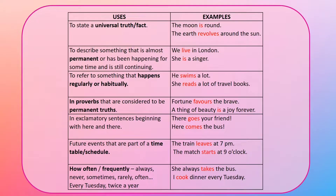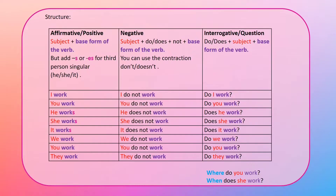Sixth, for future events that are part of a timetable or schedule — 'The train leaves at 7 PM' and 'The match starts at 9 o'clock.' Seventh, to say how often or how frequently something happens — 'She always takes the bus' and 'I cook dinner every Tuesday.'